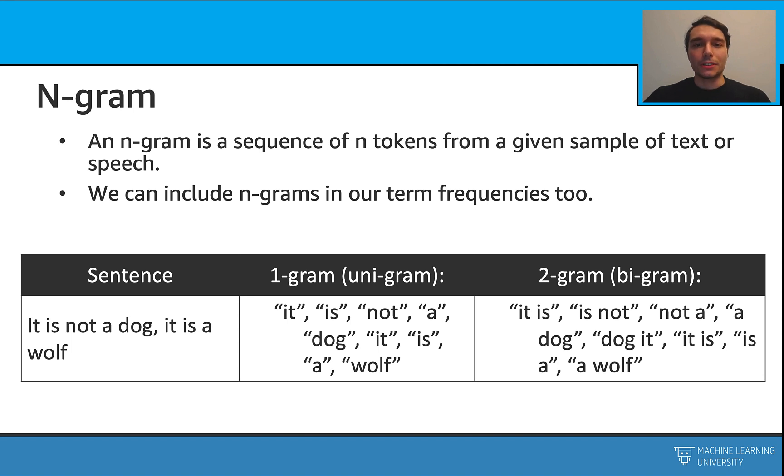N-grams are sequences of N tokens from a given text. We can use N-grams with our bag of words representation as well. Let's have a simple example. Assume this is our sentence: It is not a dog. It is a wolf. One gram is just single tokens, and two grams are these.